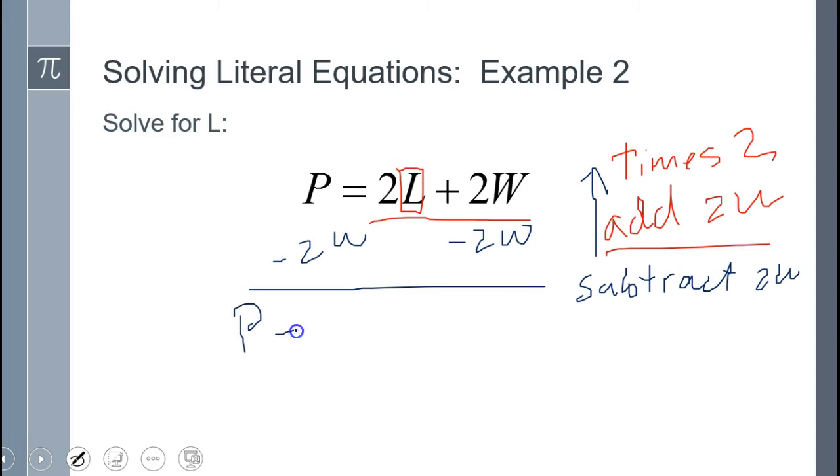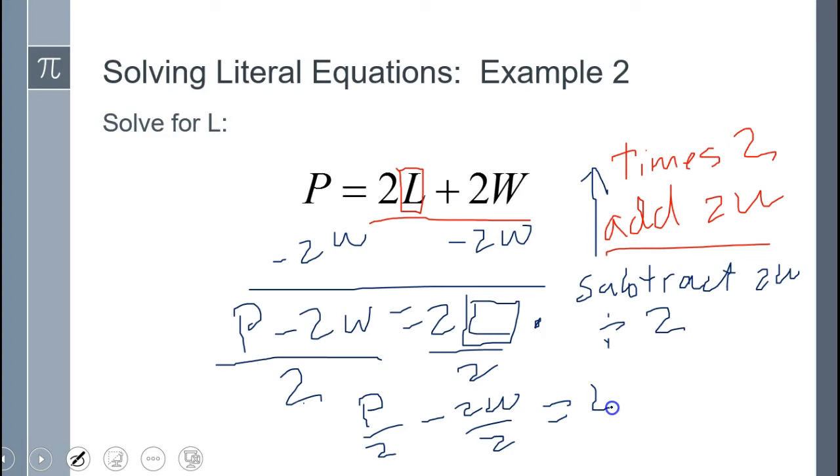That leaves me with P minus 2W equals 2L. Now I want to divide both sides by 2, because I want L by itself. Divide by 2 both sides means everything on both sides, each term. Terms are separated by addition or subtraction. P has to divide by 2, and minus 2W has to divide by 2. Now you cannot cross off this 2 and this 2, because if you do, you're not going to be dividing the P by 2. You can rearrange by making this two individual fractions on the left, and you get P over 2 minus W.